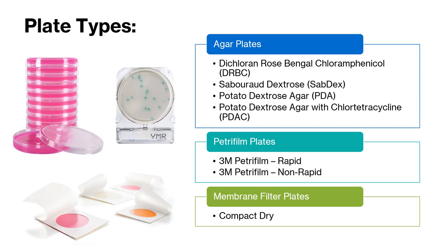With plating methods, it is important to recognize that there are many different types of plates, medias, and agars available. On this slide I have listed some of these different plate types. First are agar plates, which are sterile Petri dishes containing a growth medium solidified with agar, and in some cases other nutrients or antibiotics. The four most common agar plates — and the ones used in the experiment we'll discuss later — are DRBC, Sabdex, PDA, and PDAC.